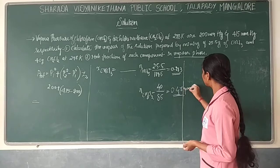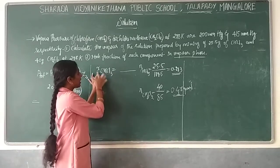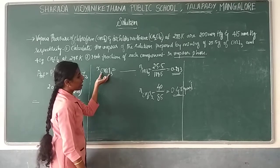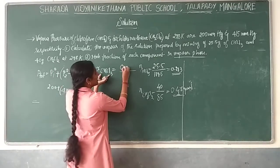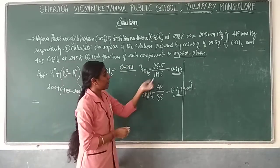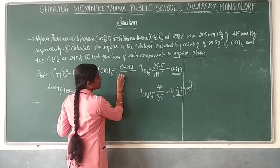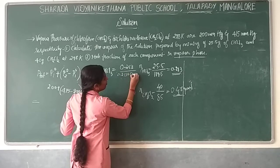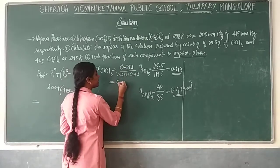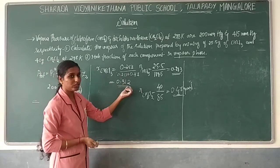Now substitute these values to find the mole fractions. Mole fraction of chloroform X1 = number of moles of chloroform divided by total moles = 0.213 divided by (0.213 + 0.47) = 0.213 / 0.683. Calculating this gives X1 = 0.312. So the mole fraction of chloroform is 0.312.